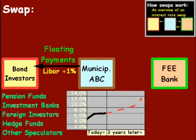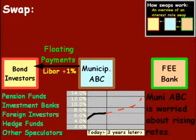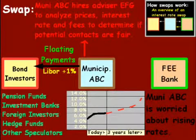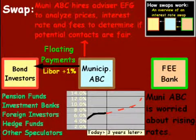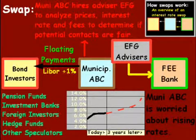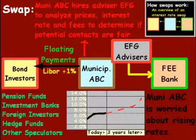Going back to our interest rate chart, we have the black line where we are right now, and MuniCorp is concerned about the red line where interest rates go up — they're worried about rising interest rates. So MuniCorp decides to hire advisor EFG to analyze prices, interest rates, and fees to determine if any potential swap contracts are fair. EFG advisors, after doing some analysis, decide that FeeBank has the best fee-adjusted product offering and can help Muni ABC get into a swap. EFG recommends FeeBank, and Muni ABC agrees.